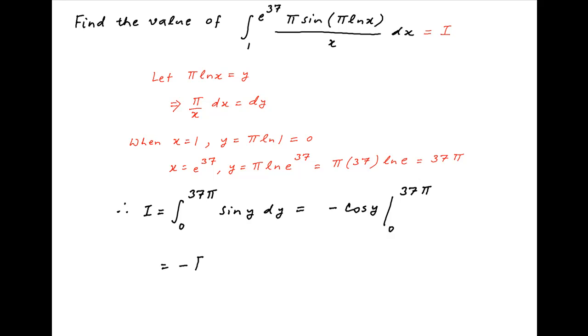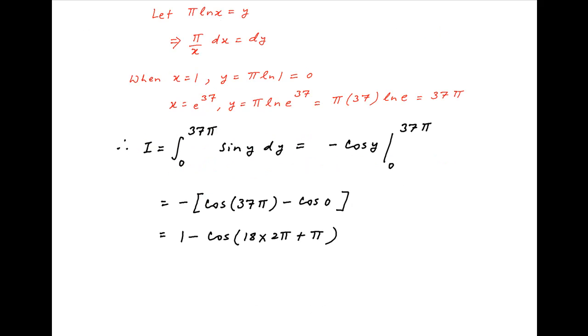This is equal to minus of in brackets cos of 37 pi minus cos of 0. Cos of 0 is equal to 1 and cos of 37 pi can be written as cos of 18 times 2 pi plus pi. Now cos of 2n pi plus theta is equal to cos theta.